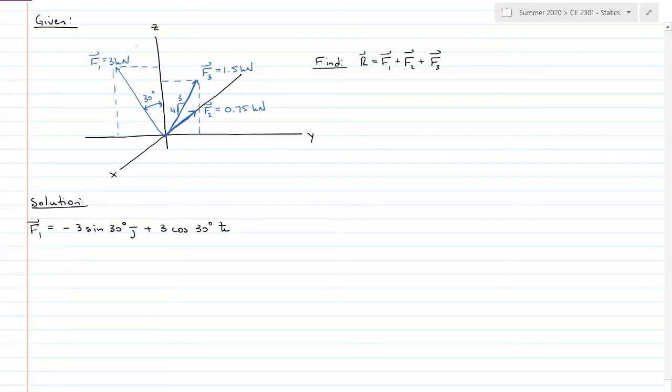This is in one plane, so we can look at this as a right triangle. We have horizontal in the Y direction and vertical in the Z direction. This equals 0 i minus 1.5 j plus 2.598 k kilonewtons. You may be asking why I put the zero when I didn't have it in my equation. We need it as a placeholder so we can line everything up when we do our addition at the end.